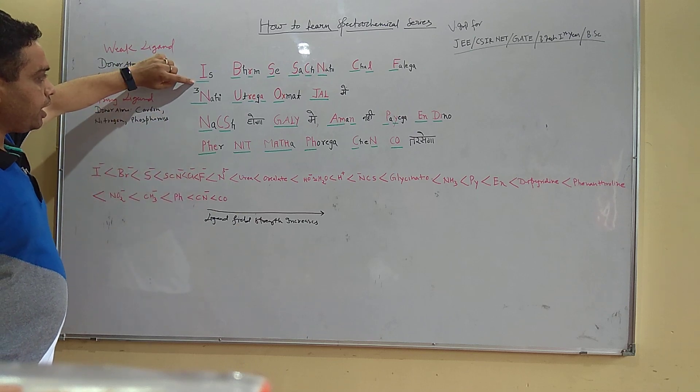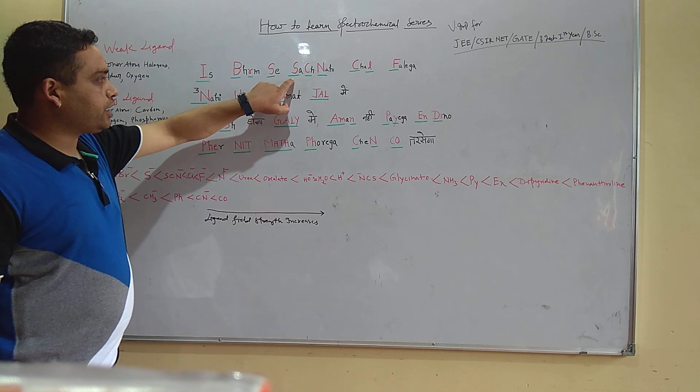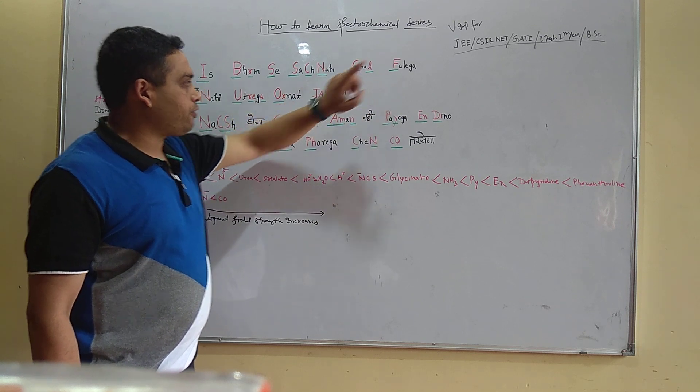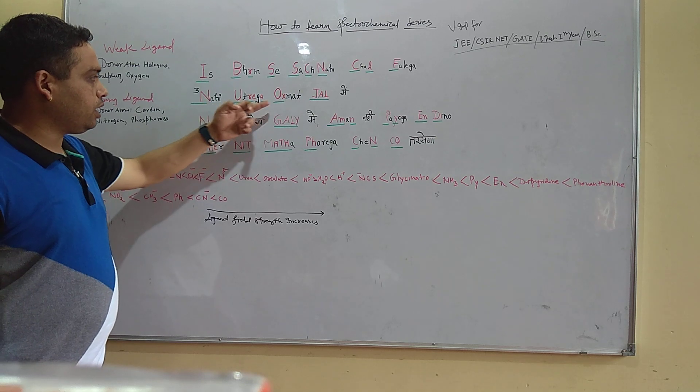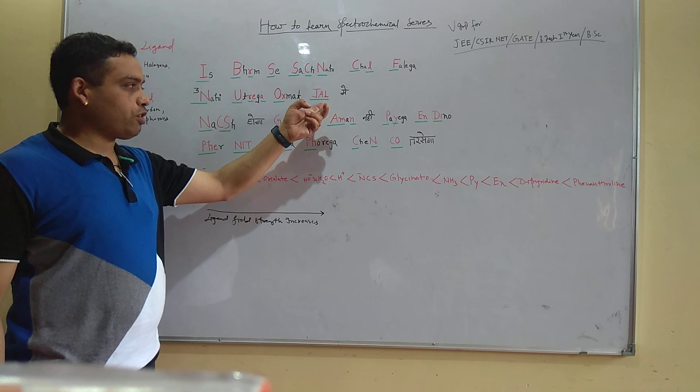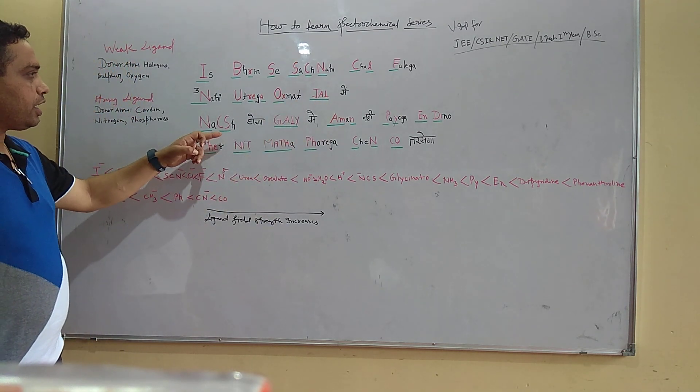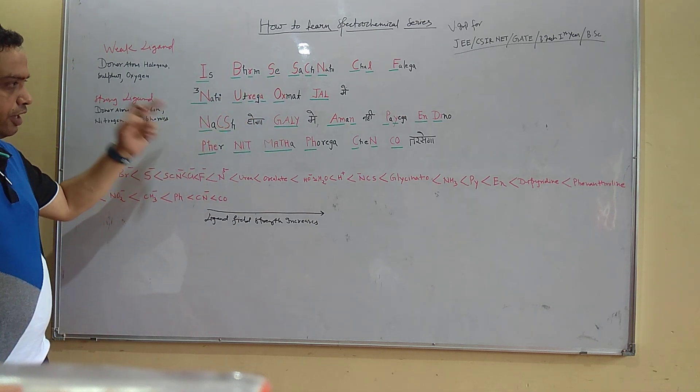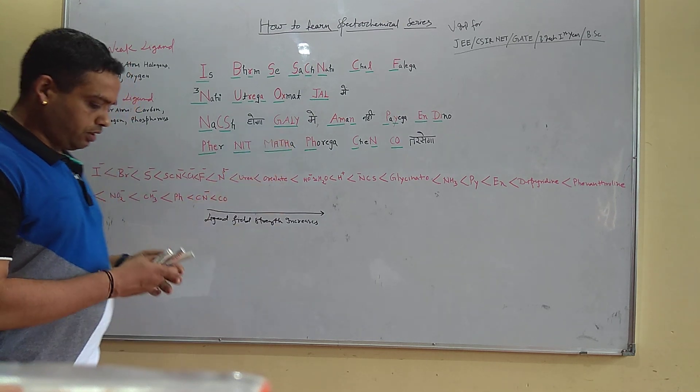You can see: I is iodine, Br is bromine, S is sulfur, SCN is thiocyanide, Cl is chlorine, F is fluorine, N3 is nitride, then urea, ox is oxalate, jal is actually H2O - you know in Hindi water means jal - then NCS is again the thiocyanide in which the donor atom is different.